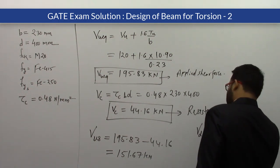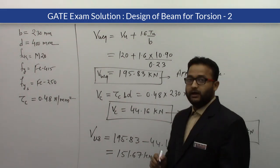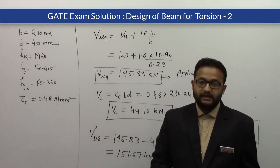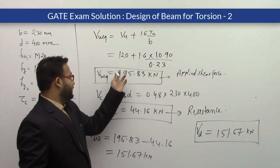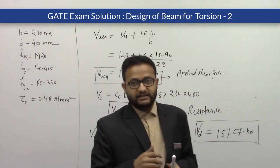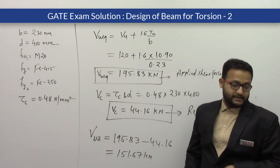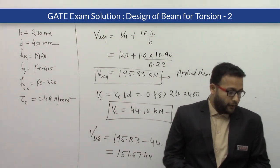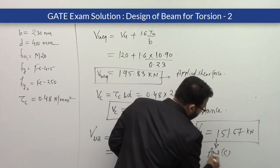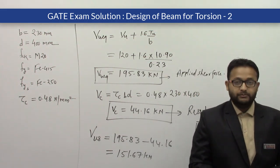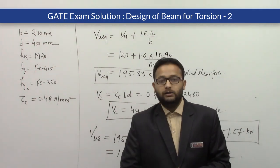The design of the stirrups follows the same procedure; we only introduced the equivalent shear force to account for torsion. The design shear force is 151.67 kN, which matches option C. Both problems were from GATE 2008 for 4 marks total. Thank you.